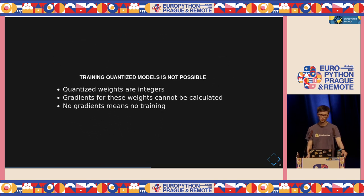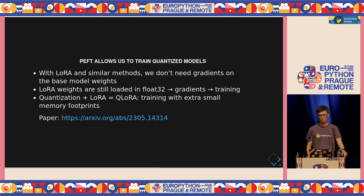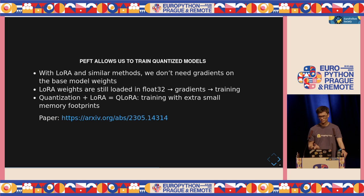There's a bigger problem: we cannot train a quantized model. The short summary is we're loading weights as integers, and thus we cannot calculate gradients for these weights — and without gradients, we cannot do training. But that's the nice thing about PEFT: if you remember, we don't have to update the base weights — they stay the same throughout training. For the LoRA weights, we can still load them in float32 precision. Since there are so few of them, it doesn't really matter for the overall memory footprint. Since the LoRA weights are in float32, we can calculate gradients and train them. This combination is called Q-LoRA — quantization plus LoRA.